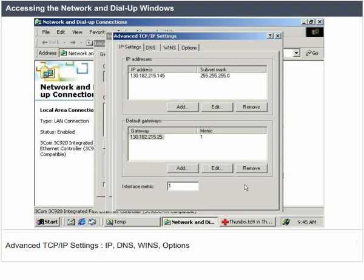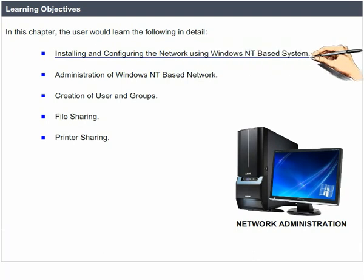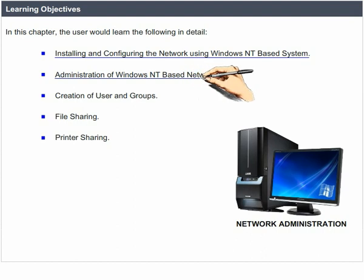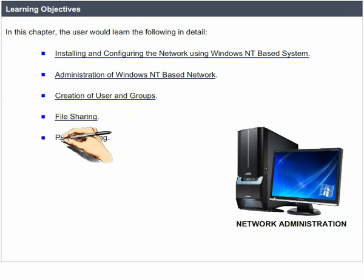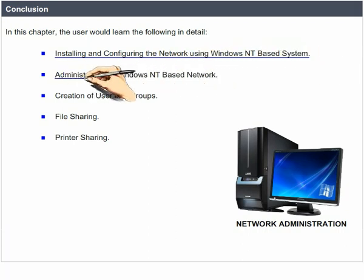Network Administration — Learning Objectives. In this chapter, the user would learn the following in detail: installing and configuring the network using a Windows NT based system; administration of a Windows NT based network; creation of users and groups; file sharing; and printer sharing. In summary, this chapter has covered: installation and configuration of the network using Windows NT, administration of the Windows NT based network, creation of users and groups, file sharing, and printer sharing.